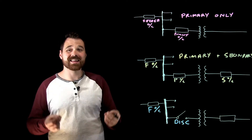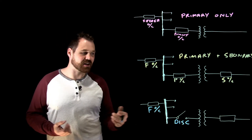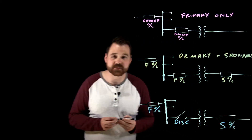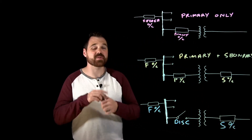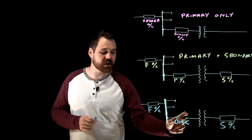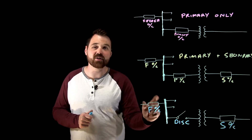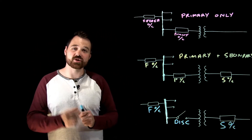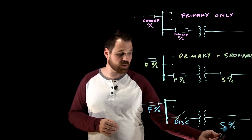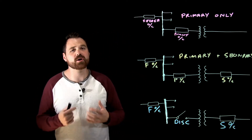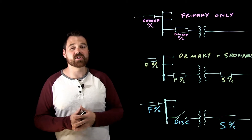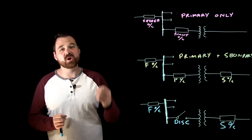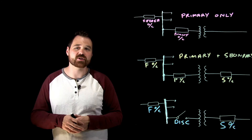What happens in that situation is I am going to require that secondary overcurrent device. The reason is that because I only have a disconnect on the primary, my feeder overcurrent is so big that it's only going to protect against short circuit conditions. So I am going to require that secondary overcurrent device, and that secondary overcurrent device is really there to provide overload protection so we're not burning out the transformer.